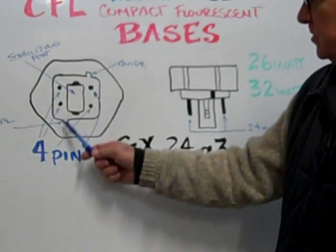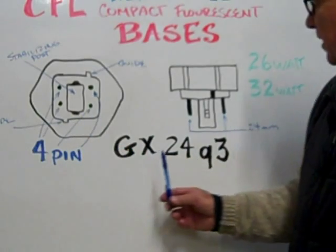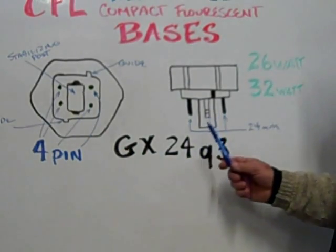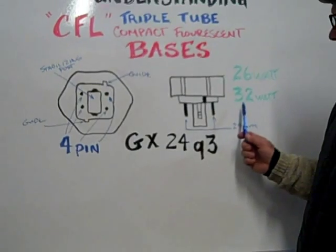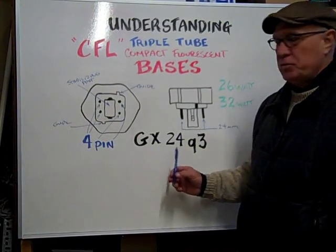Offset guides are on the bottom of the base as well. This base is commonly found on a 26 watt and 32 watt compact fluorescent triple tube.